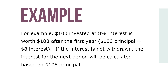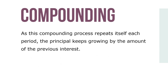For example, $100 invested at 8% interest is worth $108 after the first year — $100 in principal and $8 in interest. If the interest is not withdrawn, the interest for the next period will be calculated based on the $108 principal. As this compounding process repeats itself each period, the principal keeps growing by the amount of the previous interest.